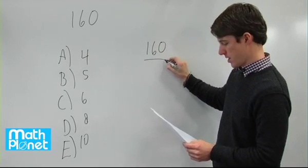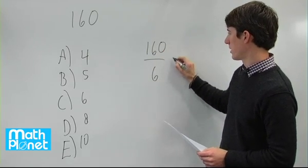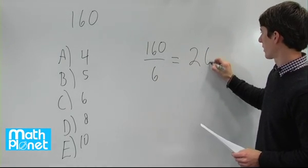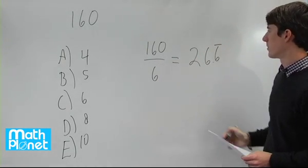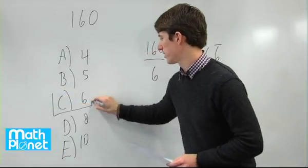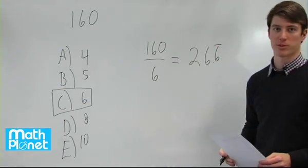Let's try 160 divided by 6. You can use a calculator or long division and you get 26.6 repeating. So this is not a whole number of students so our answer is that 6 cannot be the number of classrooms.